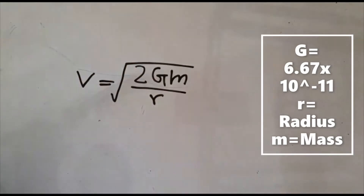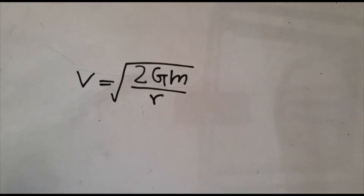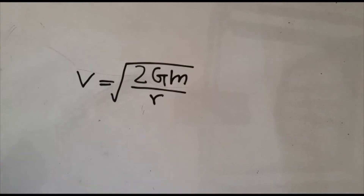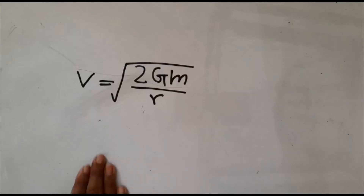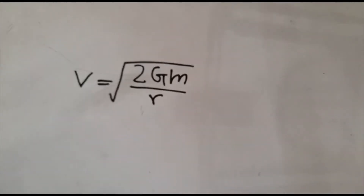When you hear the word black hole, what comes into your mind is a black colored sphere. Most people think that black holes are black because the substance they are made up of is black. Actually, that's nothing more than a misconception.